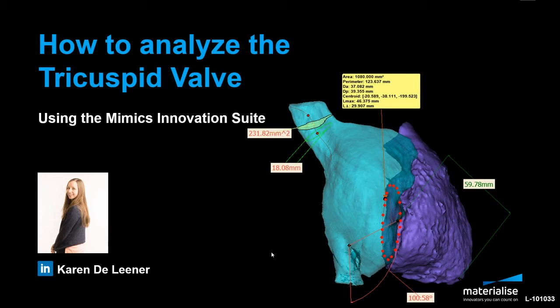Currently there is a variety of trans-catheter replacement and repair devices being developed. The Mimics Innovation Suite can be used in different phases of this development process — from R&D to get an understanding of the complex anatomy of the target population, to first screening and planning, and finally to scale up through scripting for larger clinical trials and the commercial launch. Since the tricuspid valve is a complex structure and given the variety of devices being developed, I will explain multiple key measurements.